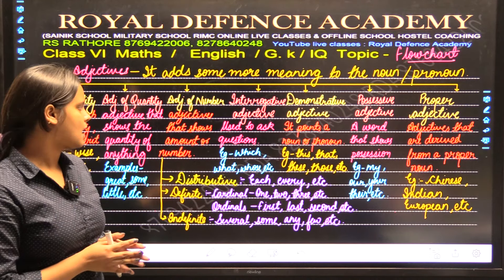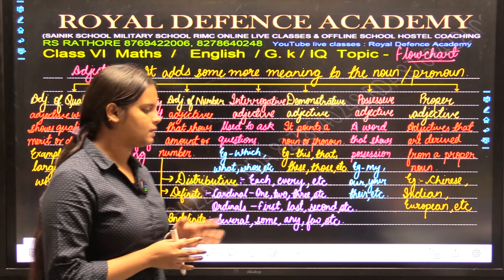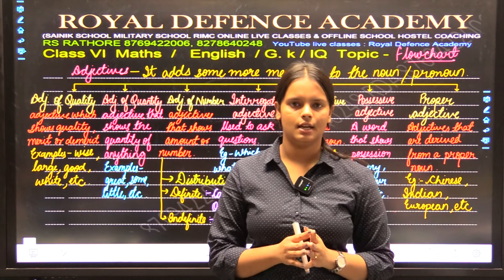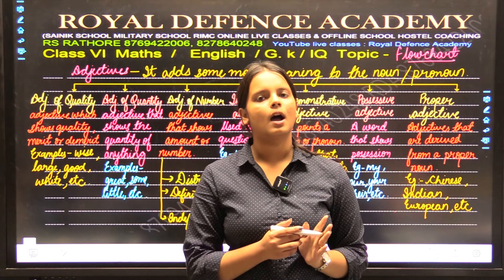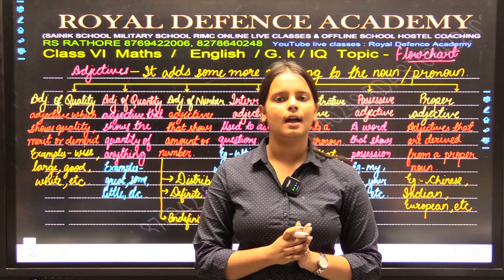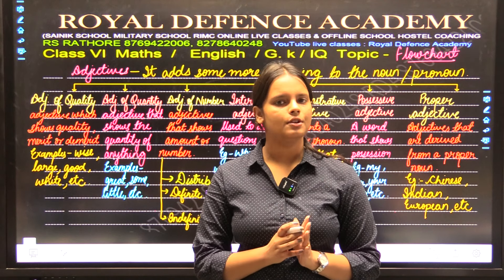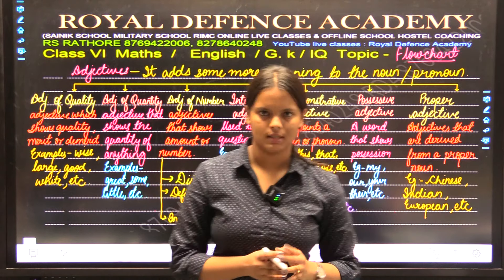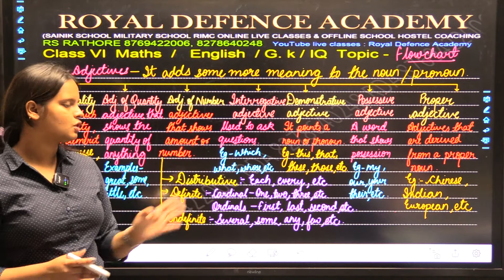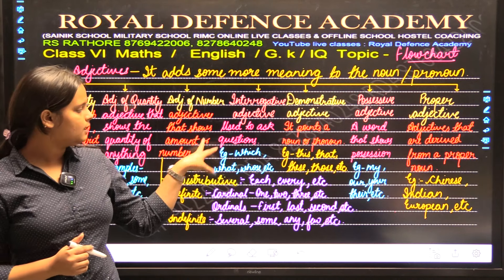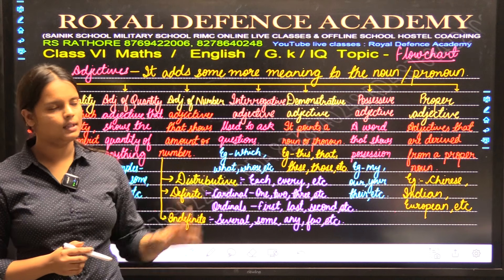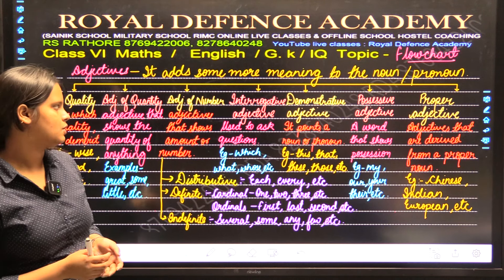Fourth is interrogative adjectives. Interrogative adjectives are basically those adjectives which ask questions about noun and pronoun. When we are asking a question about noun and pronoun with the help of WH words — which, what, whose — the answer will be a noun or a pronoun. That is why these are interrogative adjectives.